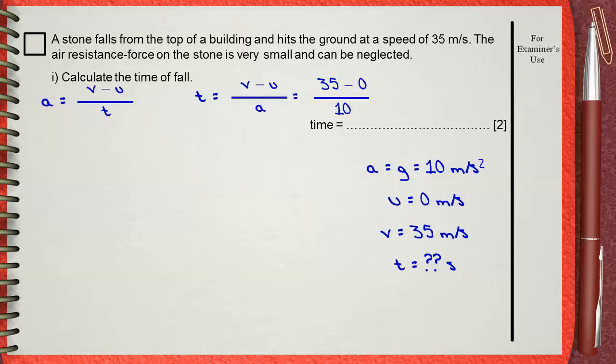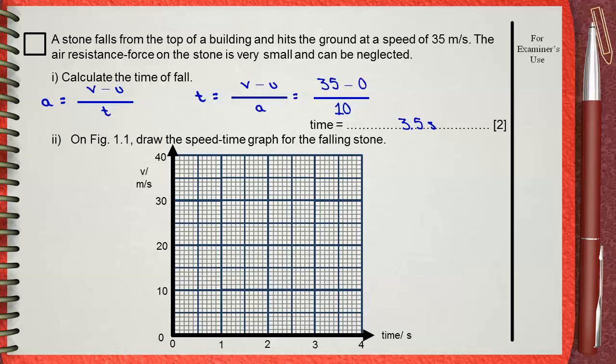The next question: On figure 1.1, draw the speed-time graph of the falling stone. Now you have a stone that started from rest, and after 3.5 seconds it hits the ground with a speed 35 meters per second. So you will start from rest, 0, and draw a straight line of constant acceleration.